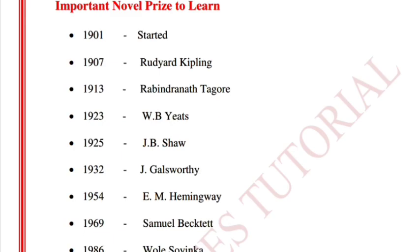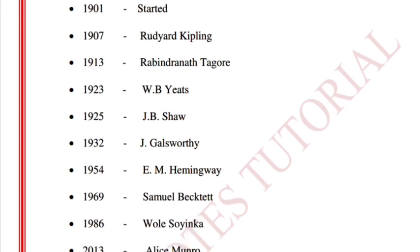Now a short test on Nobel Prizes. Nobel Prizes started in 1901. Rudyard Kipling got the Nobel Prize in 1907. Rabindranath Tagore in 1913. W.B. Yeats in 1923. G.B. Shaw in 1925. Galsworthy in 1932.